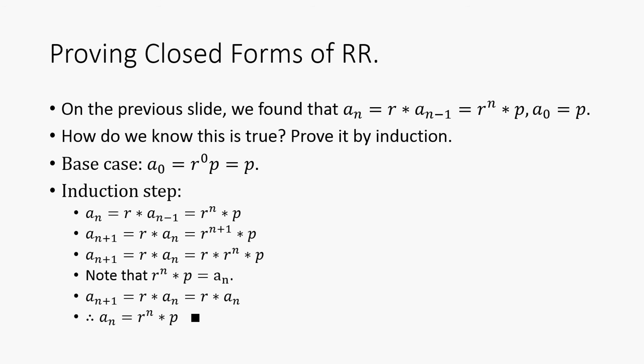Alright, so on the previous slide we found that a_n = r * a_(n-1). And that was equivalent to r^n * p, where a_0 = p. Well, how do we know this is true? We're going to prove it. So first we have our base case, which means that we have to check that it works for at least one condition.